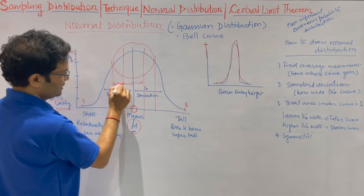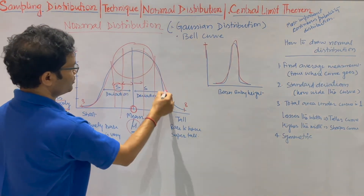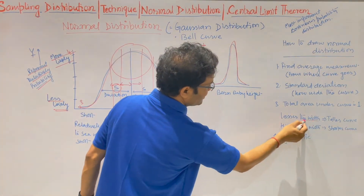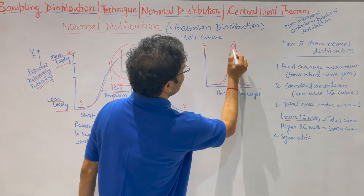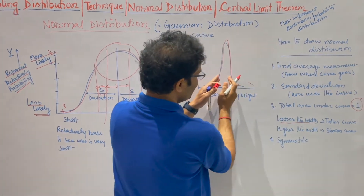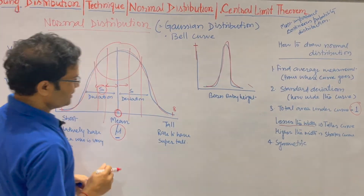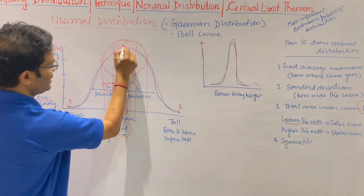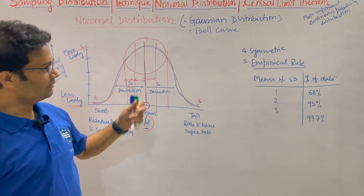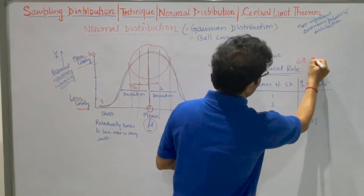One important fact: the total area under the curve is always one, because total probability is always one. If the width of the curve is wider, it becomes flatter; you have to maintain a total area of one, so if the curve is wider the height is less, and if the curve is narrower the height is more. Also one important fact: it is always symmetric — the left-hand side is equal to the right-hand side. This leads to the empirical rule, also called the 60-95 rule.